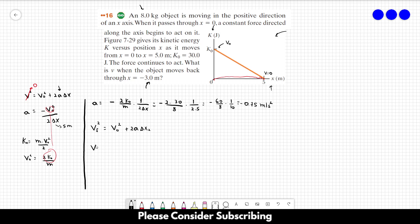So the final speed is equal to the square root of V₀ squared plus 2 times a delta x2. And this is equal to the square root of V₀ squared, which is equal to 2 times K₀ over m.